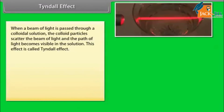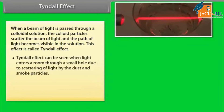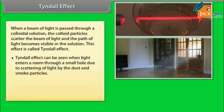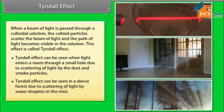Tyndall effect: When a beam of light is passed through a colloidal solution, the colloidal particles scatter the beam of light and the path of light becomes visible in the solution. This effect is called the Tyndall effect. It can be seen when light enters a room through a small hole due to scattering of light by dust and smoke particles, and in a dense forest due to scattering of light by water droplets in the mist.